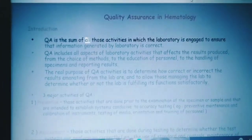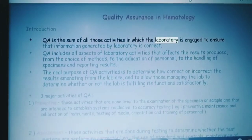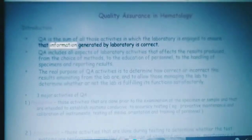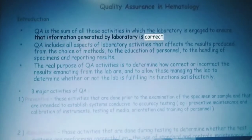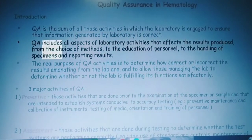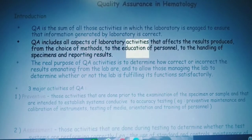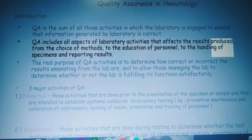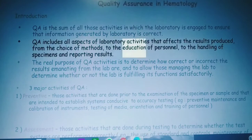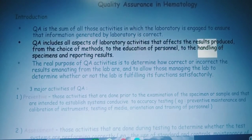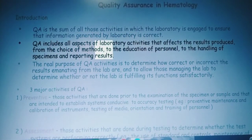QA is the sum of all those activities in which the laboratory is engaged to ensure that information generated by laboratory is correct. QA includes all aspects of laboratory activities that affect the results produced, from the choice of methods to the education of personnel to the handling of specimens and reporting results.